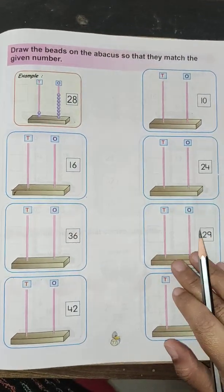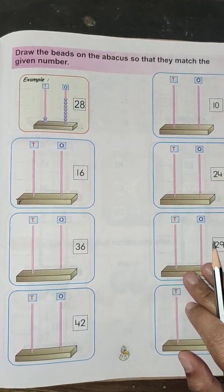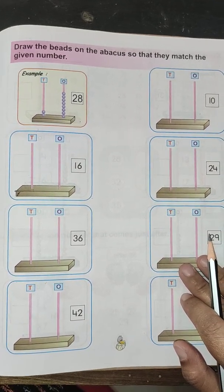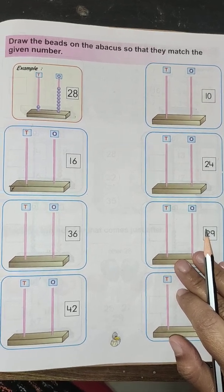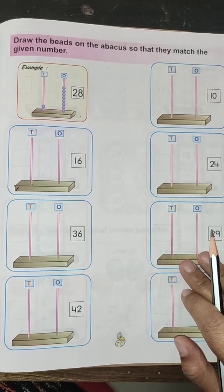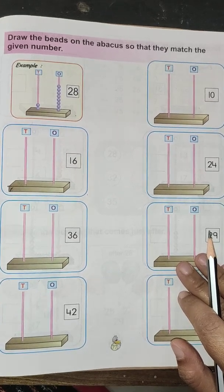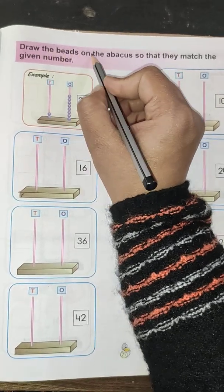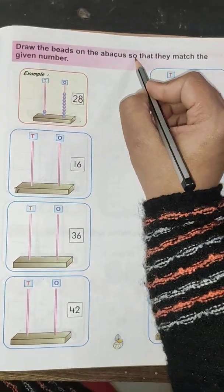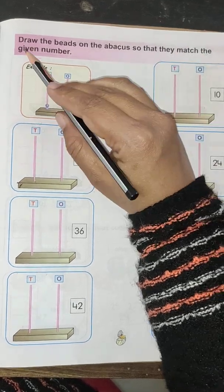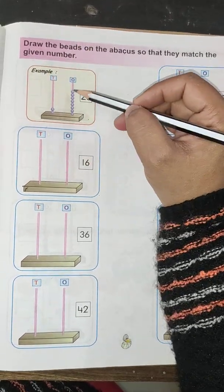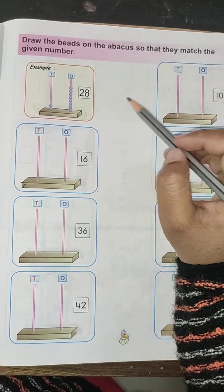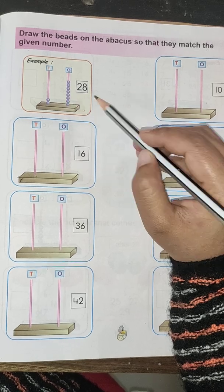Hello children, today we will do page number 77 of our kindergarten mathematics book. So open this page. Now children, what we have to do here? We will draw the beads on the abacus so that they match the given number. We will draw the beads on the abacus and match the number.